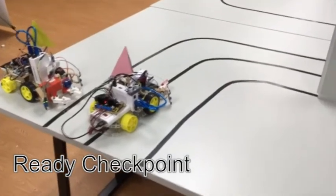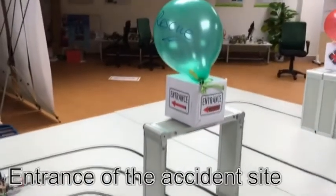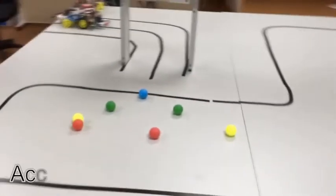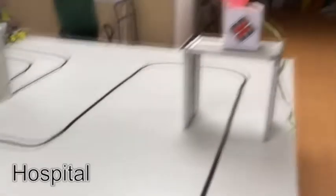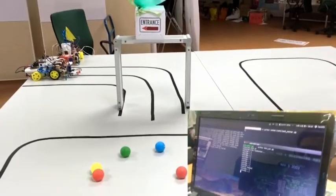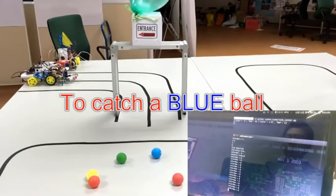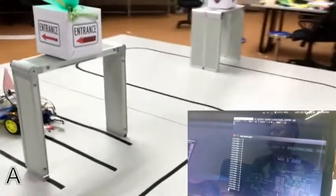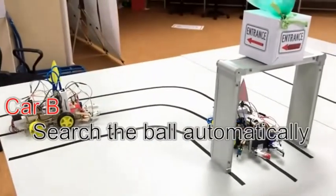At last, please see the final application of our system. Here are two rescue cars and a ready checkpoint. When they receive the task to go to the entrance of the accident site, then they respond to the test sender and then automatically search the given color balls in the accident area. After catching the ball, they patrol the line to the hospital. Now the task center is trying to assign tasks to car A, which has a pink flag, to catch a blue ball. With success, car A will go to the entrance. Now car A arrives at the entrance, responds to the center, and then automatically searches the ball.